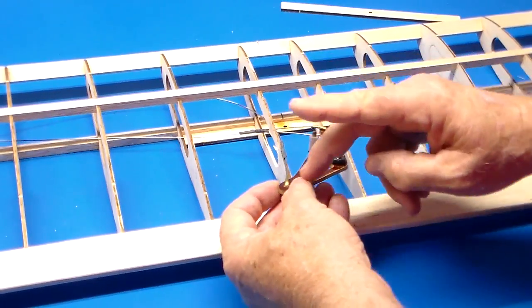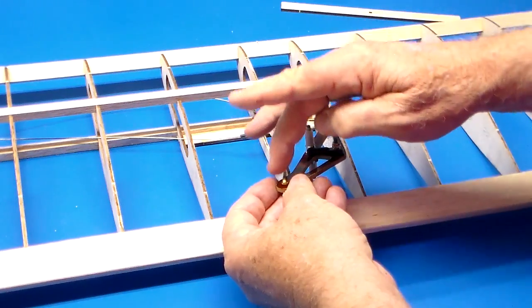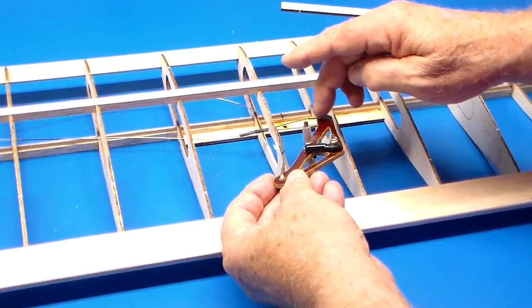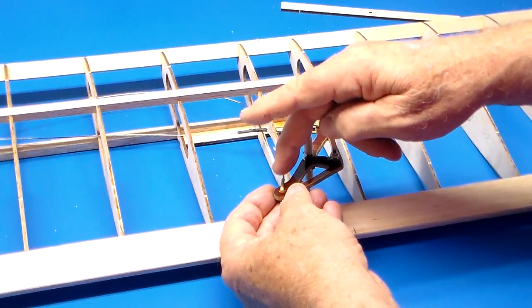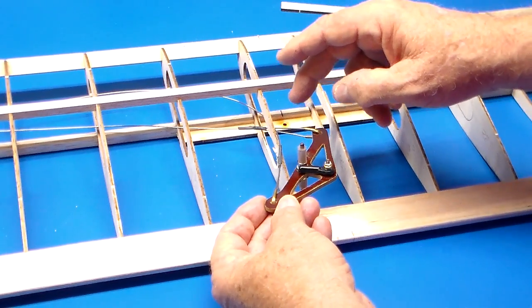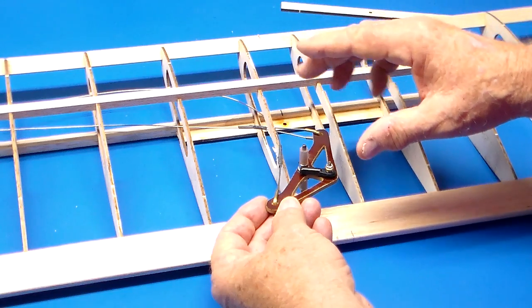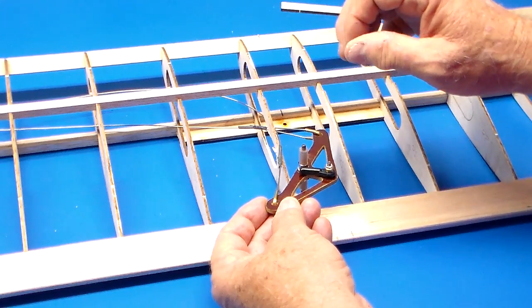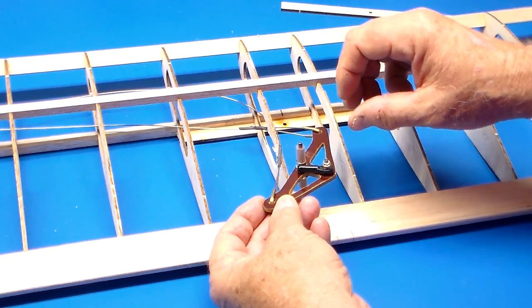What you have here is the bell crank body. The lead-outs are already attached to this with brass bushings. This is 0.027 gauge lead-out wire, and that's all I use on my bell cranks as far as the gauge goes.